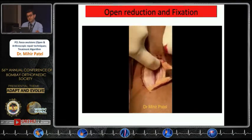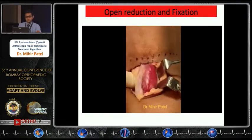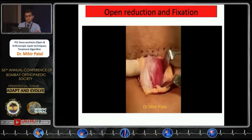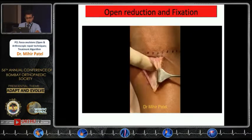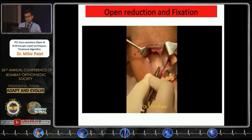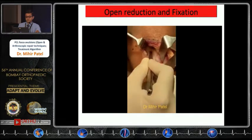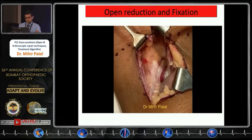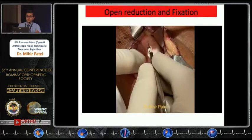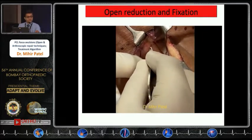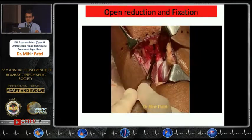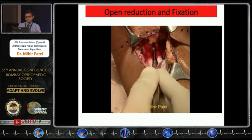The medial head of the gastrocnemius is easily dissected using finger dissection off the posterior aspect of the tibia. The medial gastroc is retracted laterally, taking all the neurovascular bundles laterally, giving direct exposure of the posterior tibia and the avulsion fracture. We identify the geniculate vessel, then the region of the PCL fossa avulsion. An inverted L-shaped capsulotomy is done posteriorly, taking us directly onto the fracture crater.